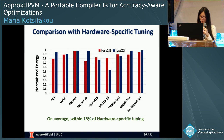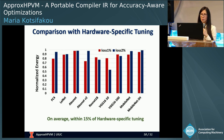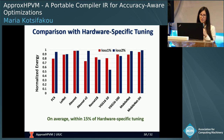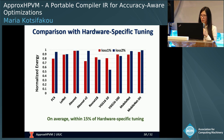The takeaway is that when absolute performance is the goal, we can support that by choosing hardware-specific tuning. When portability is important — as would be the case in domains with diverse devices — that can be supported by choosing hardware-agnostic tuning, which can be within an acceptable margin of hardware-specific tuning.